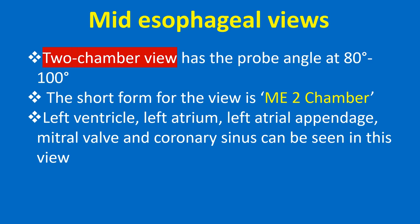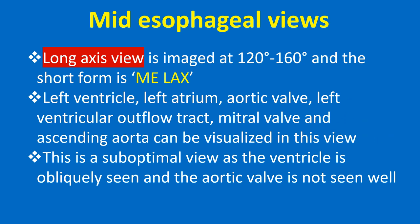The two chamber view has the probe angle at 80-100 degrees, known in short as ME two chamber. The left ventricle, left atrium, left atrial appendage, mitral valve, and coronary sinus can be seen in this view. The long axis view is imaged at 120-160 degrees, known in short as ME LAX.